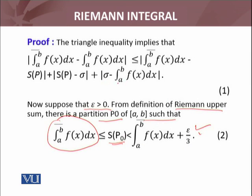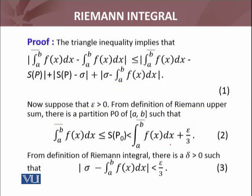Similarly, if f(x) is integrable, so any Riemann sum σ minus ∫ₐᵇ f(x)dx will also be less than ε/3. From definition of Riemann integral, there is a δ > 0 such that |σ - ∫ₐᵇ f(x)dx| < ε/3.